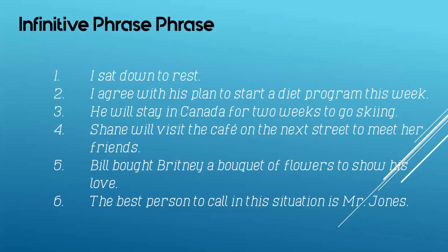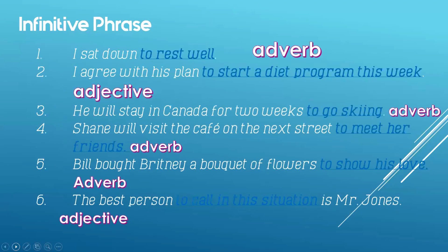Can you point out the infinitive phrase and tell me how they are used? Are they used as an adjective or an adverb? Let's answer. For number one, you have here: 'I sat down to rest well.' The infinitive phrase is 'to rest well.' This is an adverb because it modifies the verb 'sat down.' Why did you sit down? To rest well — answering the question why. Therefore, it's an adverb.